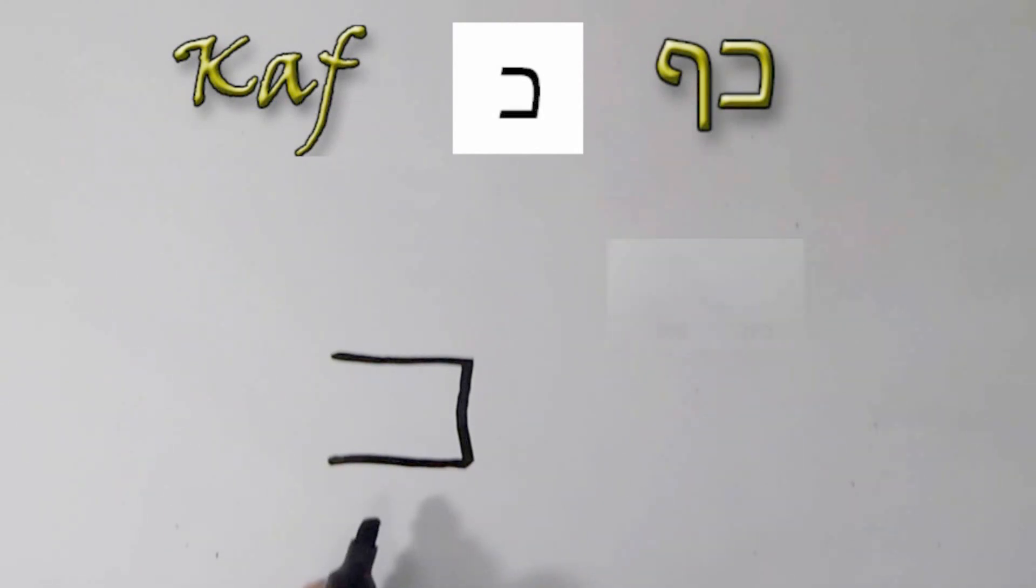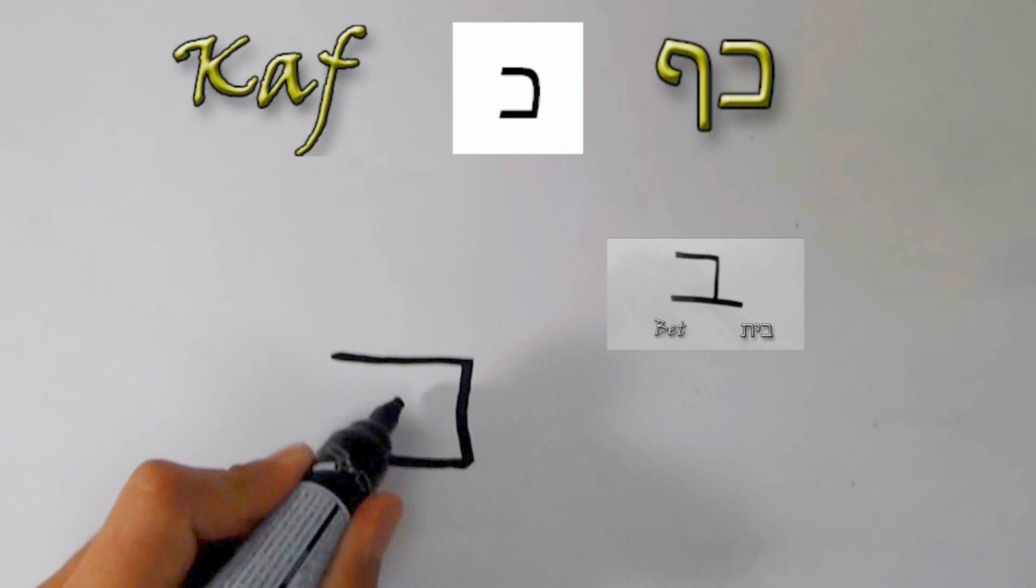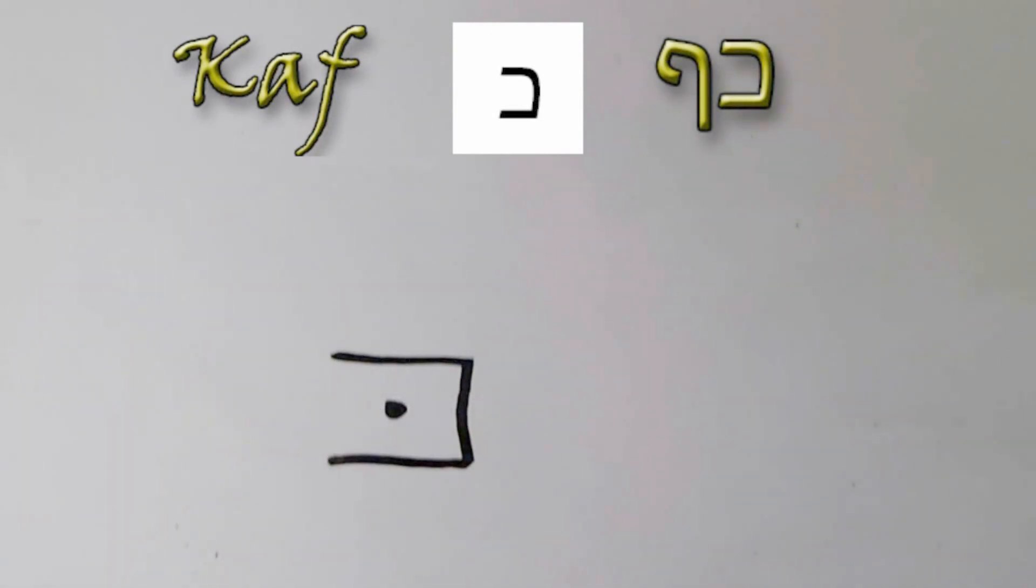Do you remember the letter Bet? We had the special dot inside the letter which changed the pronunciation of the letter. Whenever you have a dot inside the letter Chaf, you pronounce it Kaf.